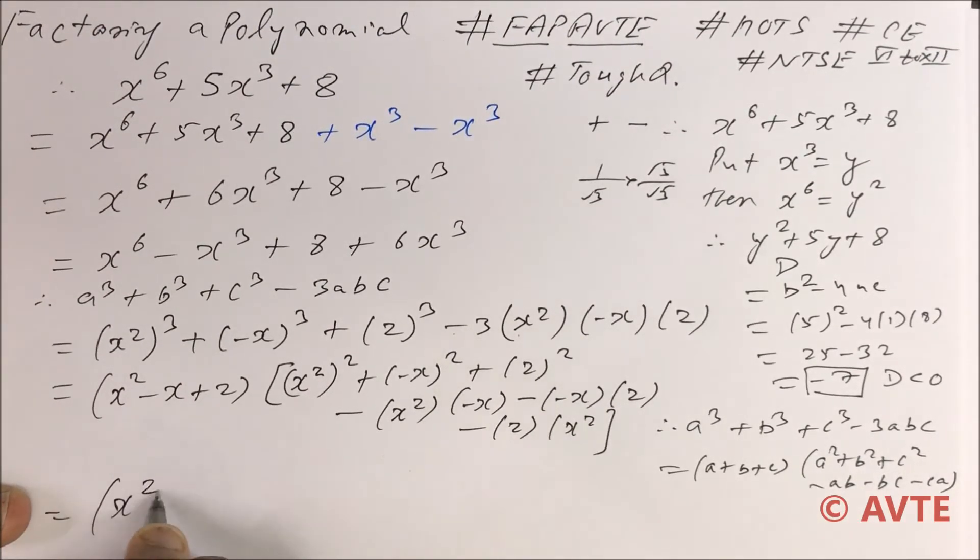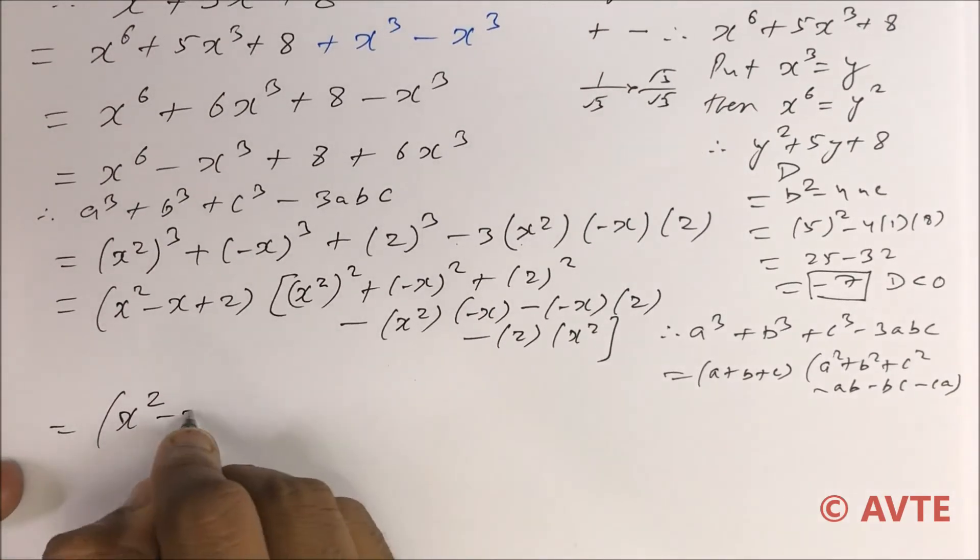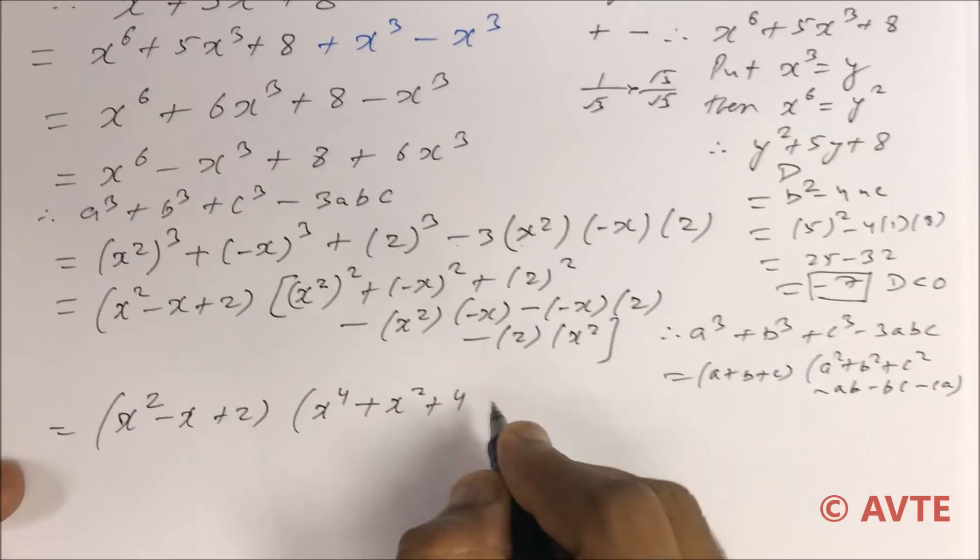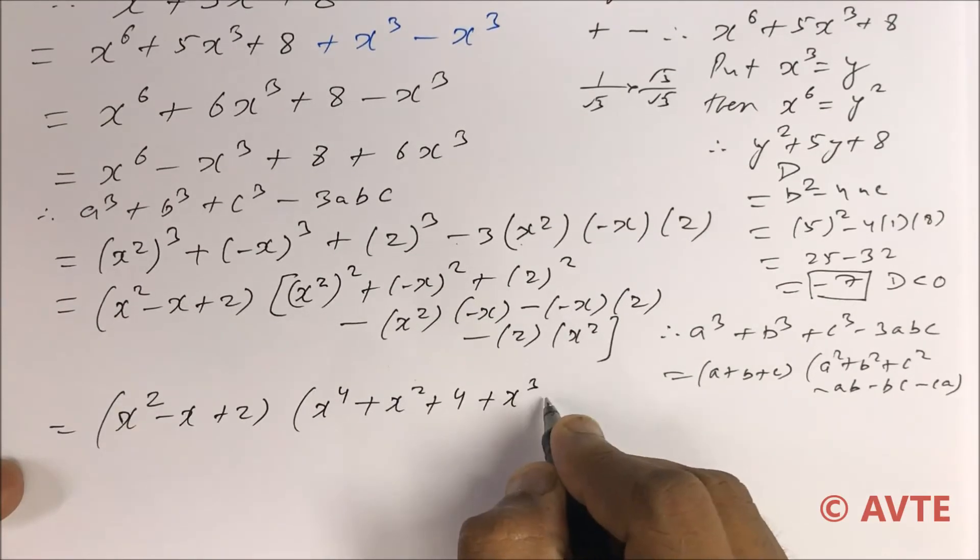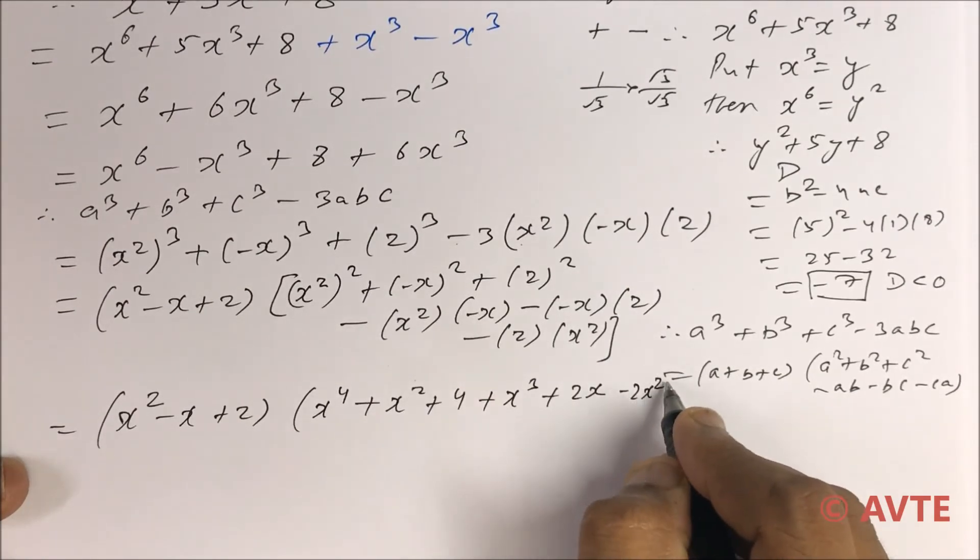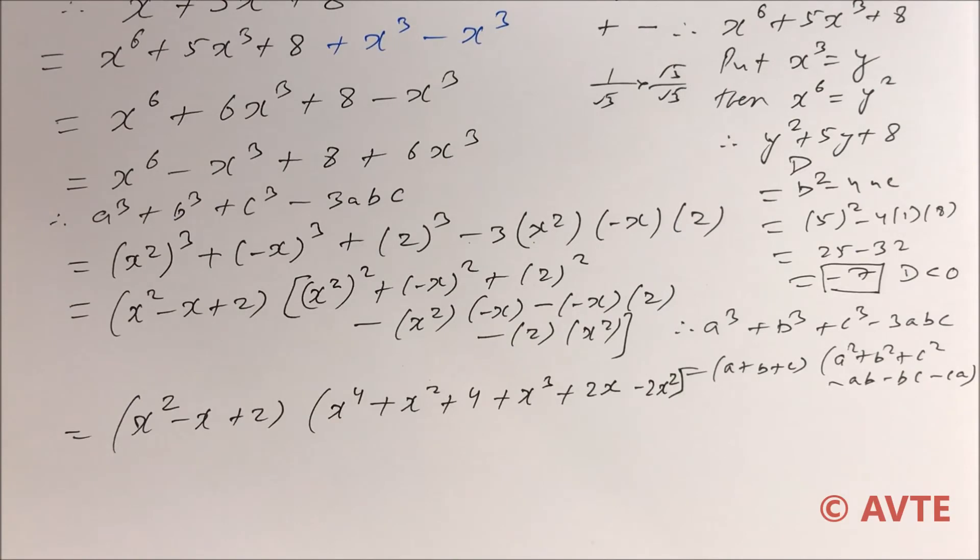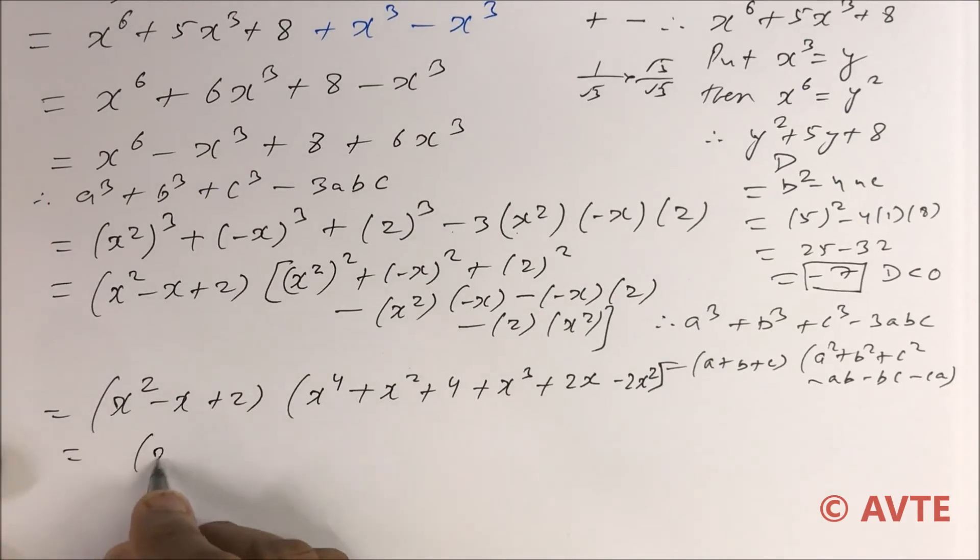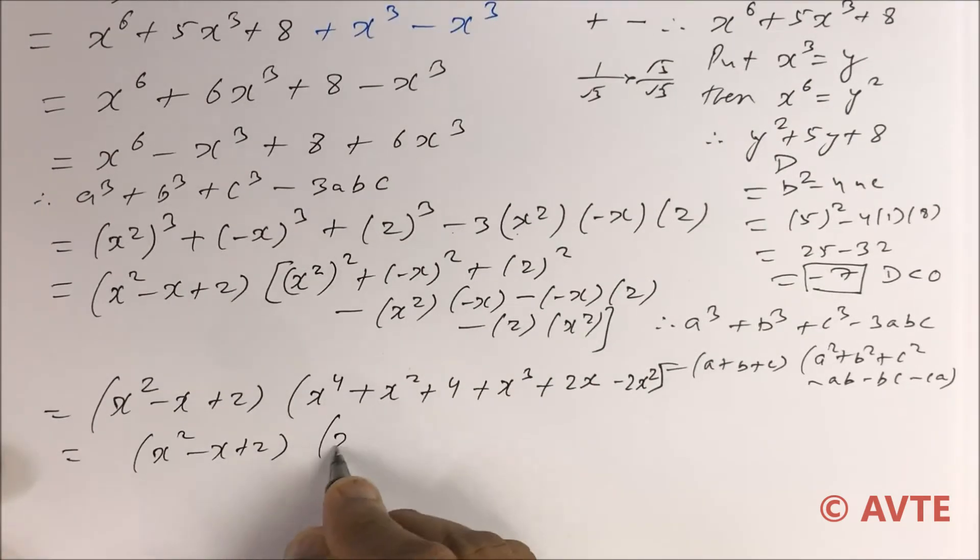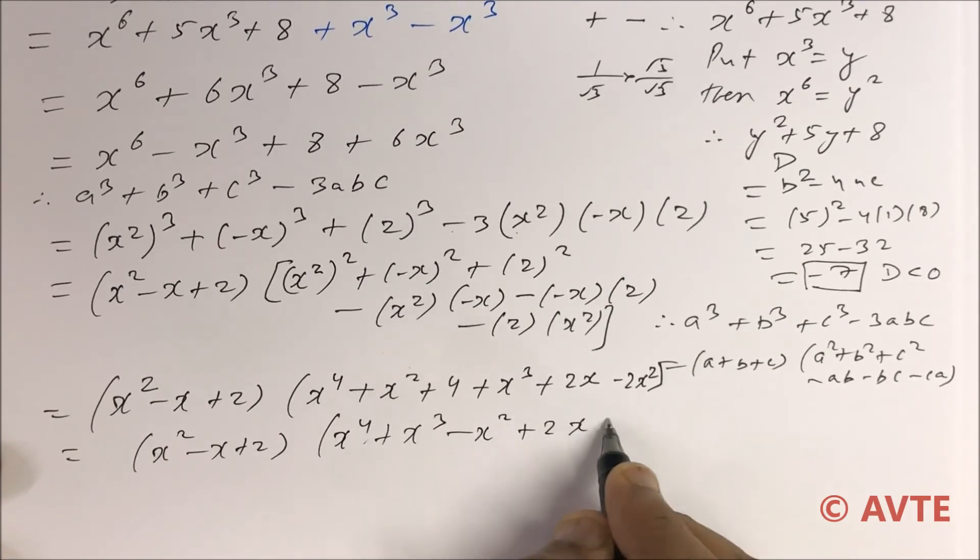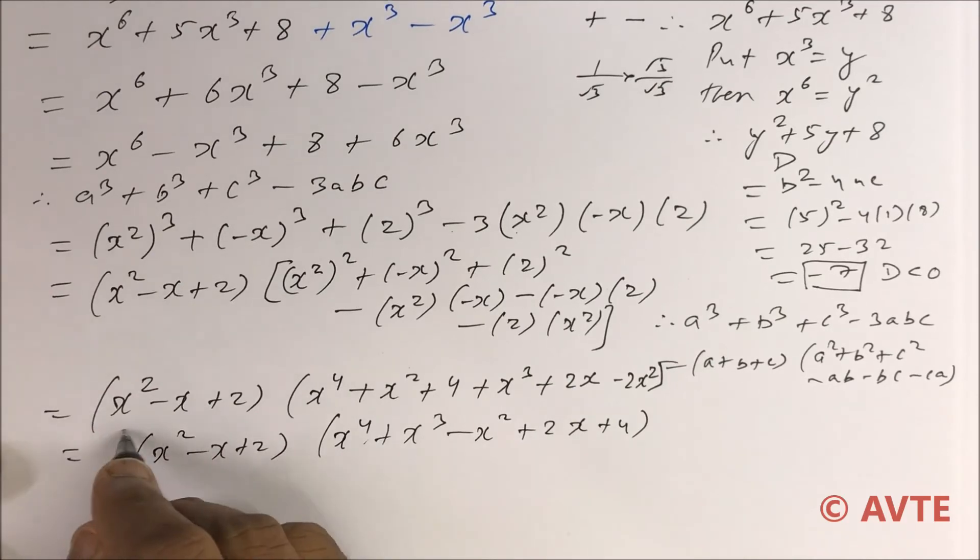The final answer is x square minus x plus 2, x to the power 4 plus x square plus 4 plus x cube plus 2x and minus 2x square. Answer is x square minus x plus 2, x to the power 4 plus x cube. Write in decreasing order, so we have to arrange minus x square plus 2x plus 4. If you multiply these two brackets you will definitely get your question.